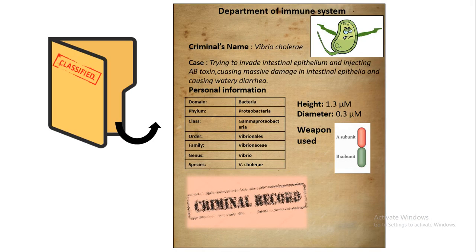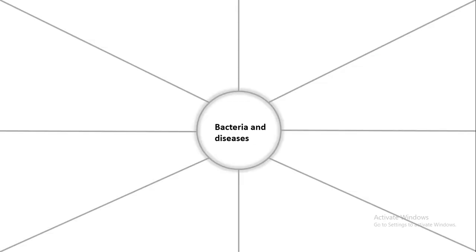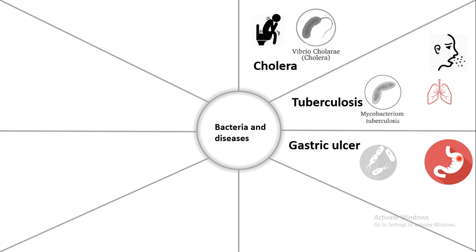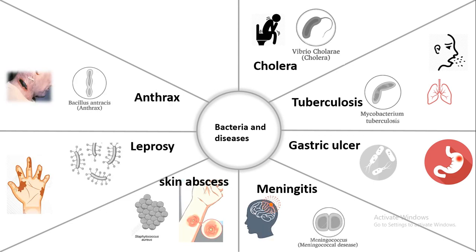Bacteria don't have a good reputation according to the immune system — they are like the most classified criminals of the immune system. Some bacteria like Vibrio cholerae are accused of causing damage and bloody diarrhea. Indeed, bacteria can also cause tuberculosis, gastric ulcer, meningitis, leprosy, anthrax, and even typhoid. So they could be quite harmful.